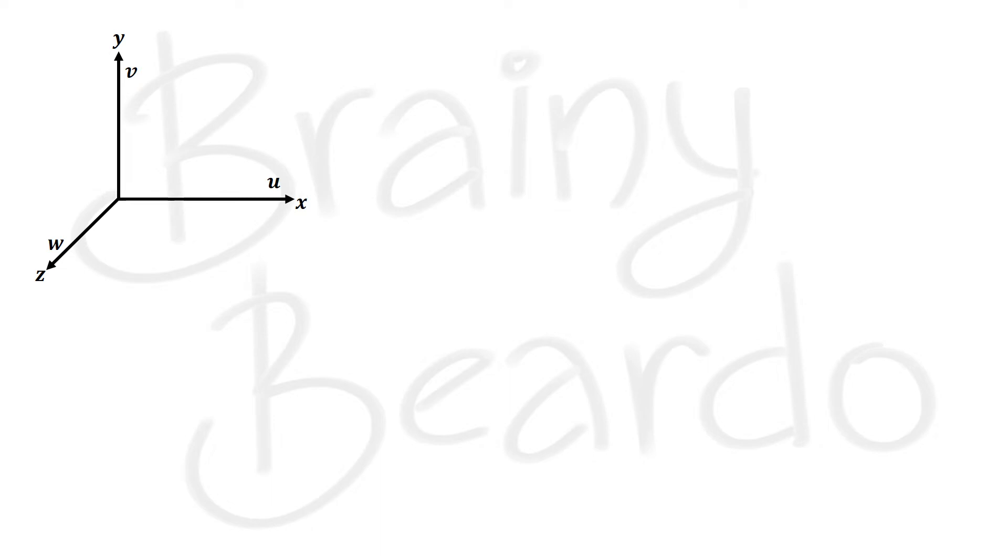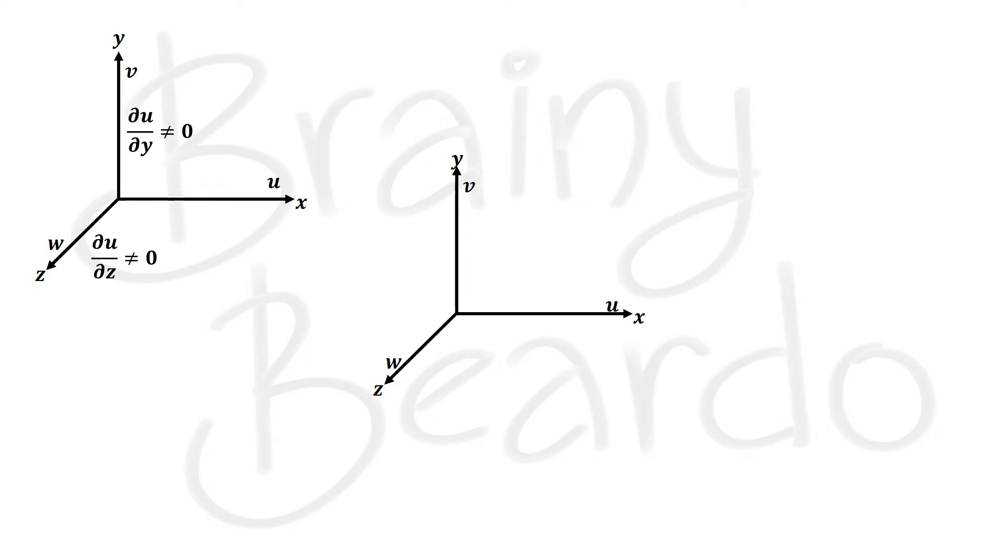With the same context, let us take a fluid flowing in three dimensions. U is the velocity component along the x-direction, V along the y-direction, and W along the z-direction. For a fluid flowing in the x-direction, for rotation to exist, the gradient of U along the y-direction and the gradient of U along the z-direction should not be equal to zero. Similarly, for flow in the y-direction, the gradient of V along the x-direction and along the z-direction should not be equal to zero.